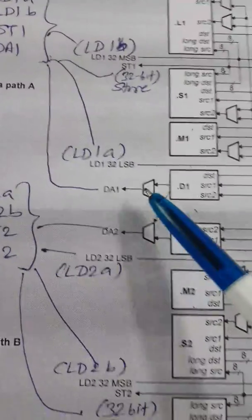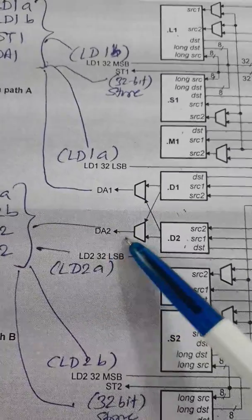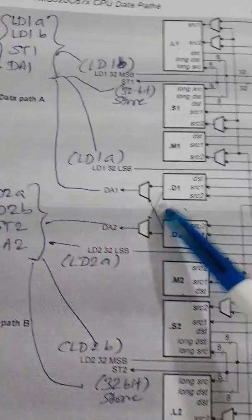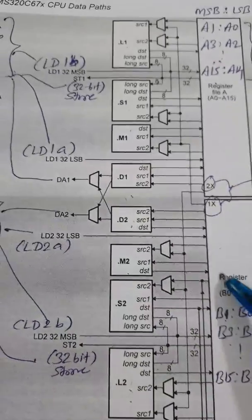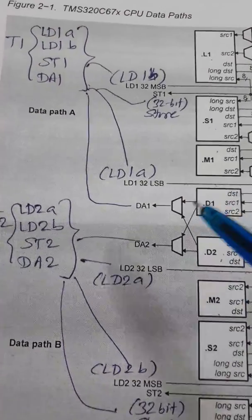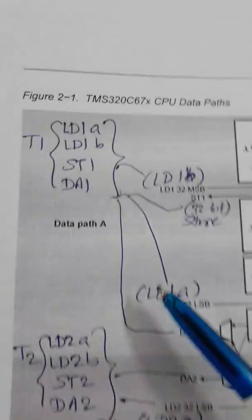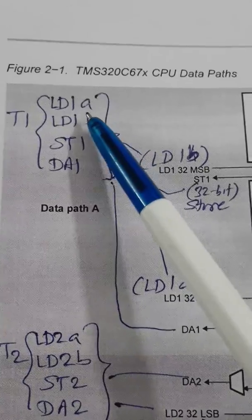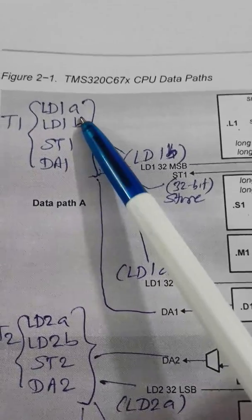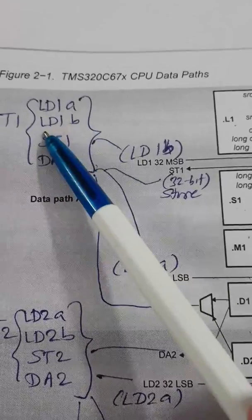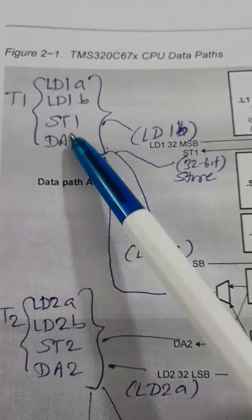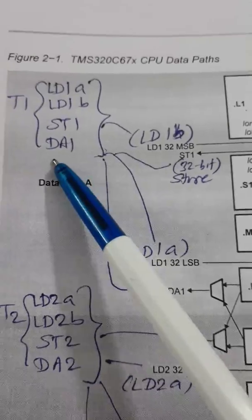Now, coming back to data address 1 and data address 2. So the memory can be accessed, data memory can be accessed by this address simultaneously. So either of these two paths can be connected to the memory through these two address lines. Then there is a standard called T1 that consists of LD1, load data 1, that is having two components, LD1A and LD1B. And there is a store T1, store data. So ST for store, LD for load and DA for data address.